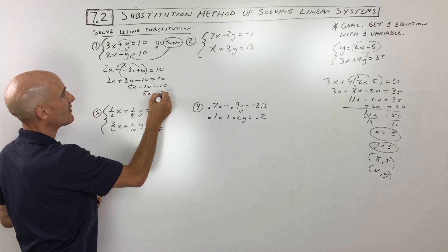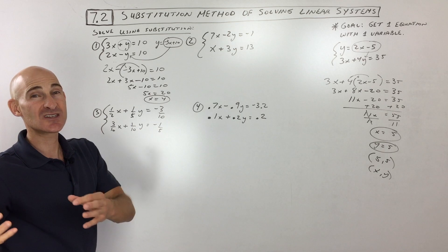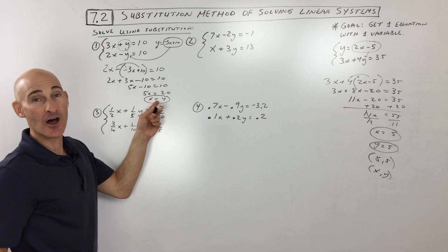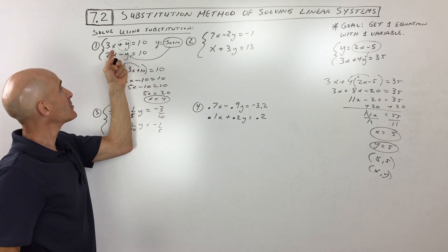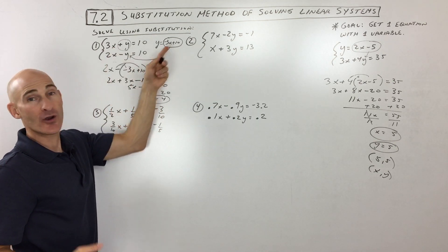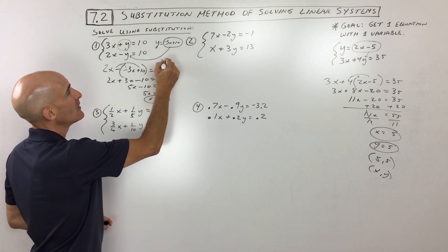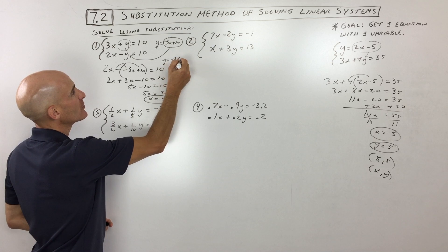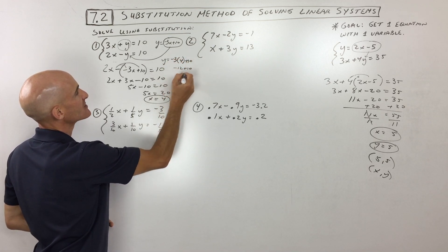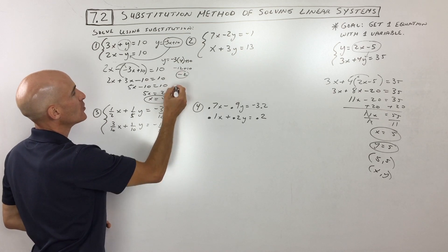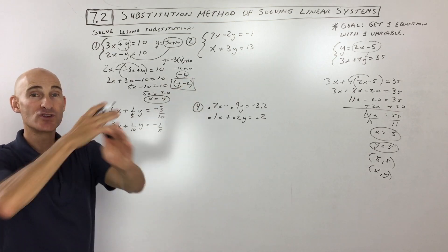Add 10 to both sides, so that gives you 5x equals 20. Divide by 5, and you can see that x equals 4. A lot of students stop there, but you want to put this 4 back in for x to find y. I would put it in here since y is already by itself. So y equals negative 3 times 4 plus 10 — that's negative 12 plus 10, which is negative 2. So our answer is going to be 4 comma negative 2 — that's the point where the two lines cross.